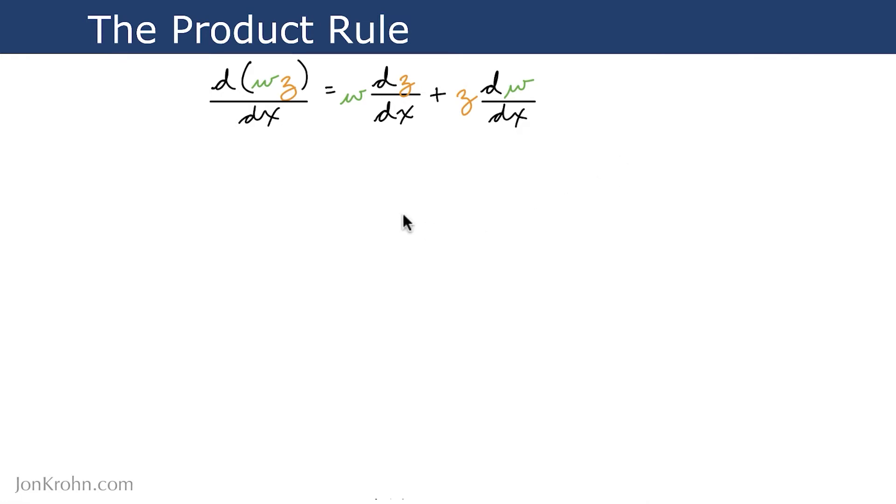The product rule enables us to take two variables that we'd like to take the derivative of and compute the derivative of those two variables separately. So if we have two variables, w and z, the product rule states that we can split that up into two terms.